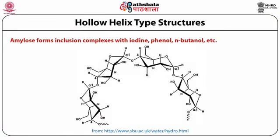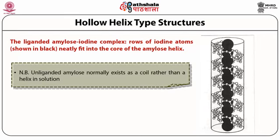Amylose forms inclusion complexes with iodine, phenyl, n-butanol, and similar molecules because it is a conformationally flexible molecule. It can orient and reorganize itself to accommodate these compounds within its helical core. In the liganded amylose-iodine complex, the iodine atoms fit neatly into the core of the amylose helix, as shown in the picture.